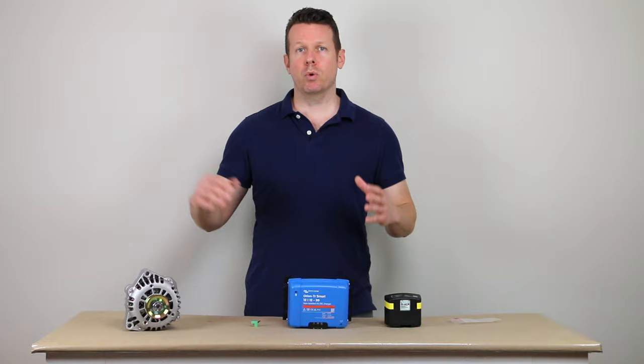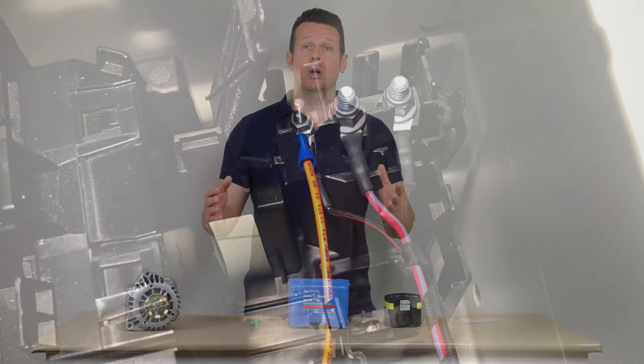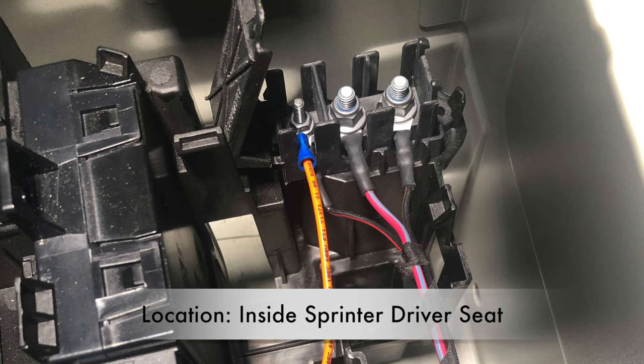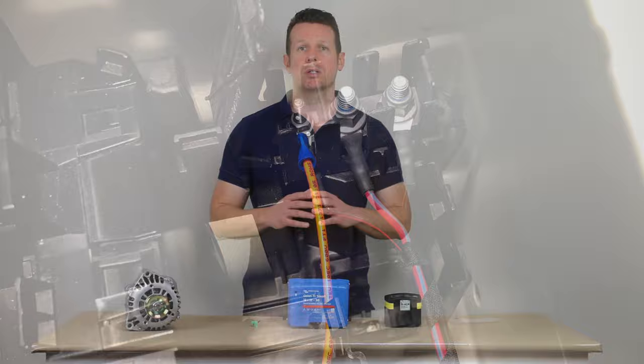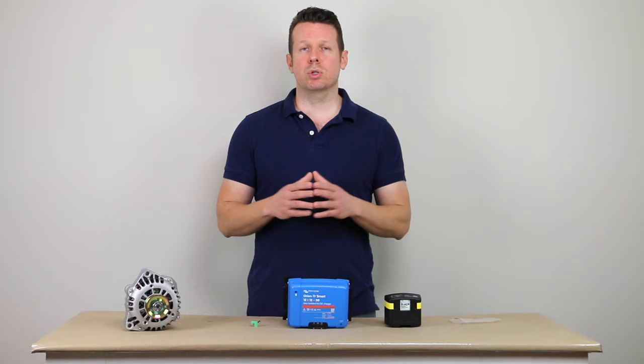So here is a picture of an orange wire that ties in on a 2019 Sprinter. This is going to have 12 volt positive voltage when the engine is on, and it's going to have zero volts when the engine is off. And then here is a short clip of me finding a ignition controlled fuse in a Chevy express.